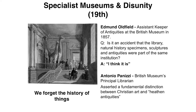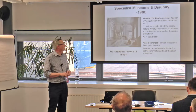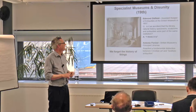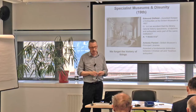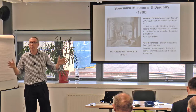In the 19th century, parliamentary committees examined the way we stored and showed collections. Edmund Oldfield, assistant keeper of antiquities at the British Museum in 1857, was asked by a committee whether it was an accident that the library, natural history specimens, sculptures and antiquities were part of the same institution. He thought it was an accident — but it wasn't. It was a development from the original Wunderkammer. That history of why the collection was put together was already being lost.